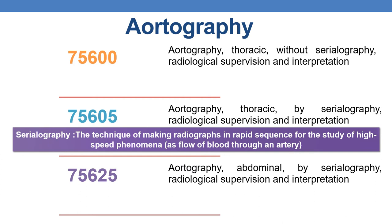Now coming to the CPT codes for aortography. First, CPT 75600 — aortography, thoracic, without serialography, radiological supervision and interpretation. The next code is 75603 — aortography, thoracic, with serialography, radiological supervision and interpretation. The next is 75625 — aortography, abdominal, with serialography, radiological supervision and interpretation.